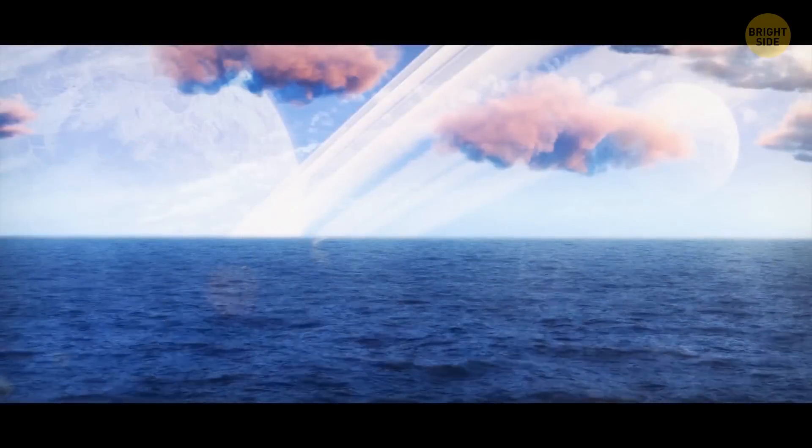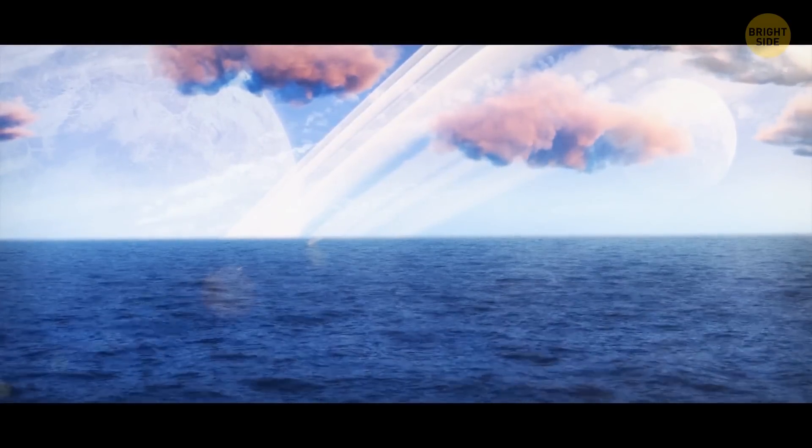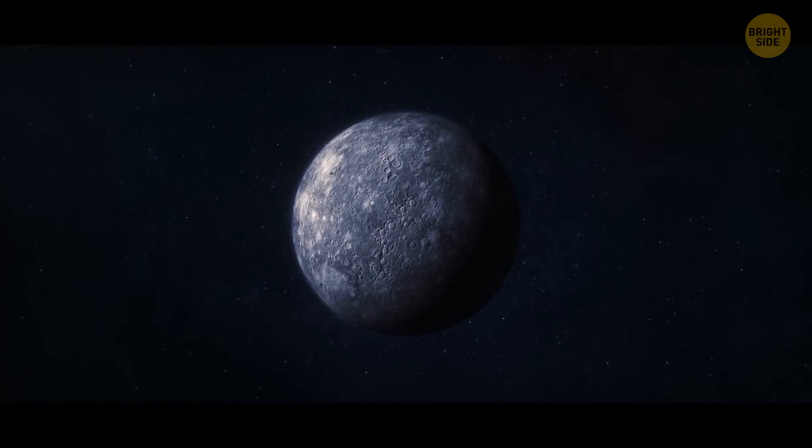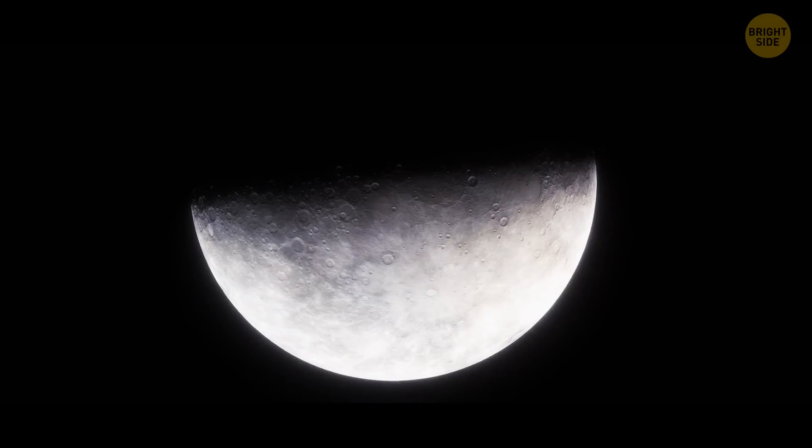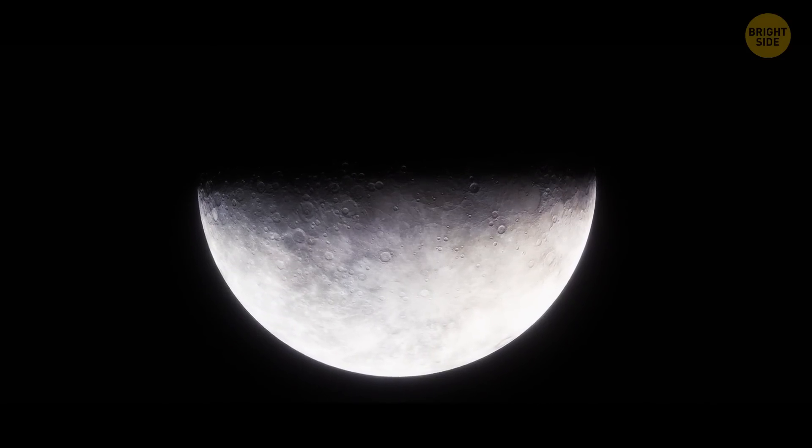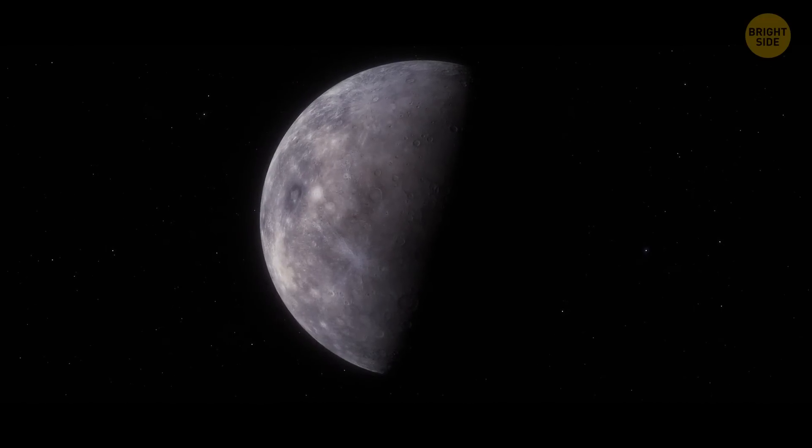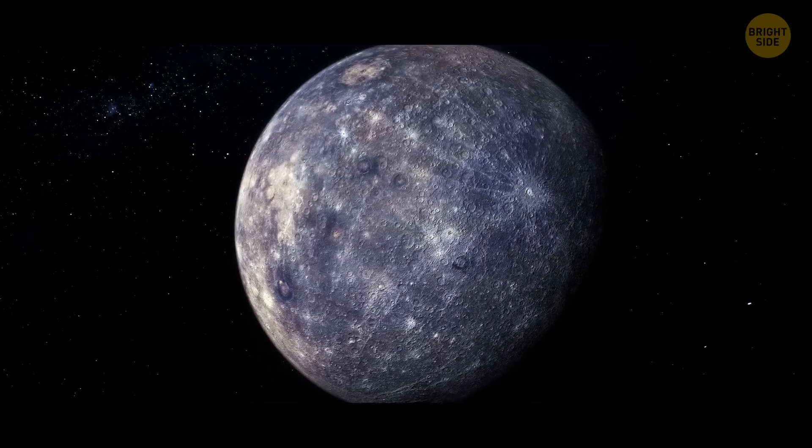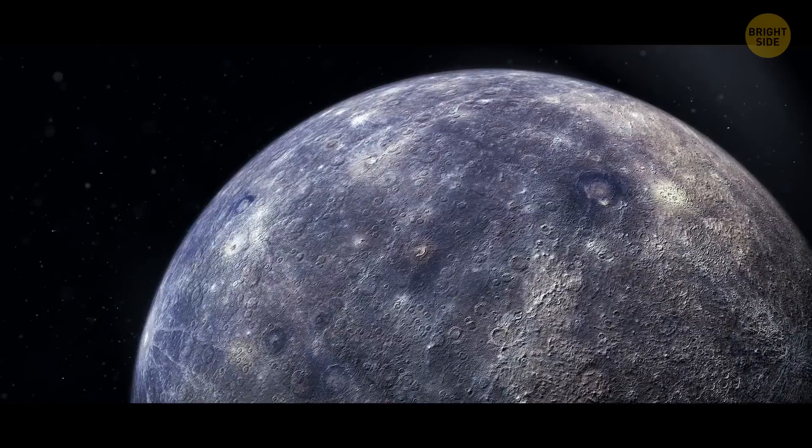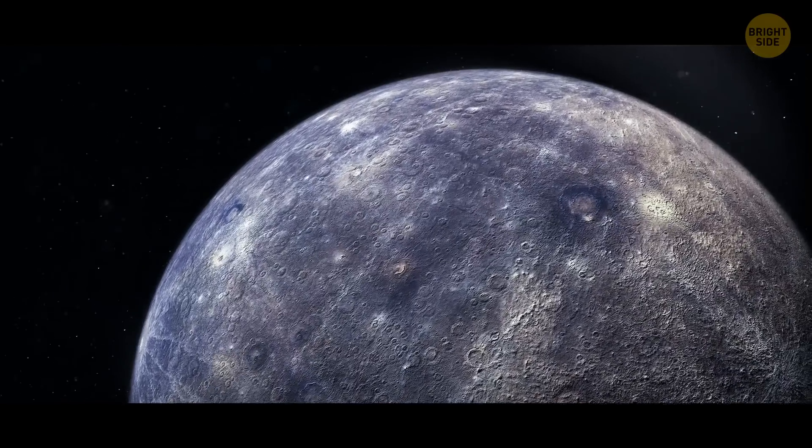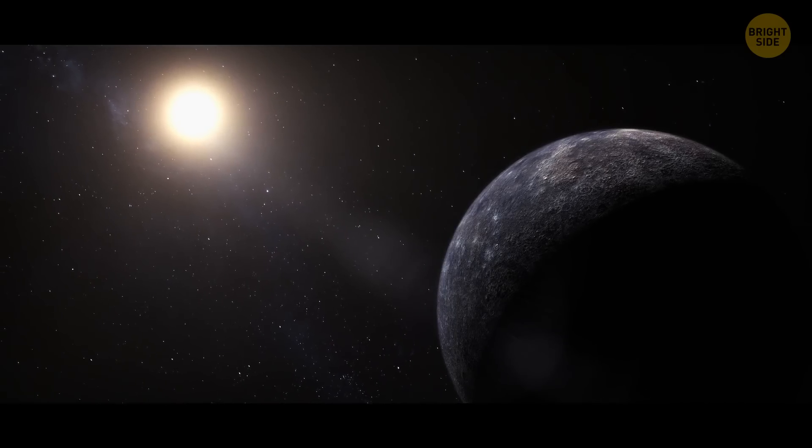Scientists say the key ingredient for life is water. But, well, there's water on Mercury. This planet has deposits of water ice at its south and north poles, but only because those places never see the light. Everywhere else, water simply evaporates from the surface of the planet. Mercury is way too close to the Sun.